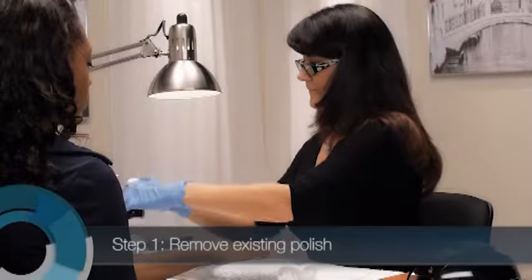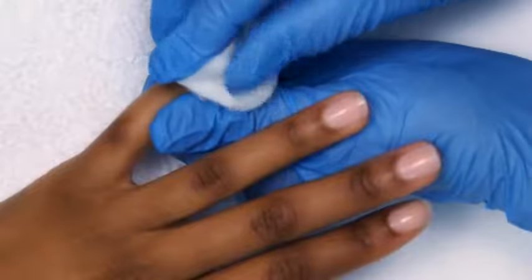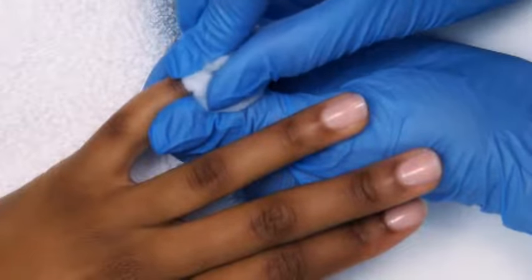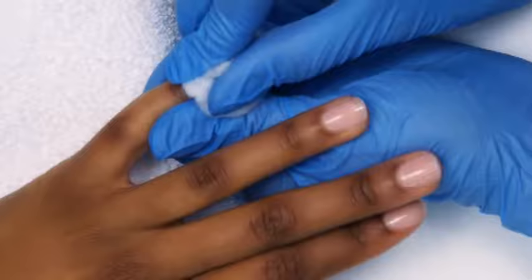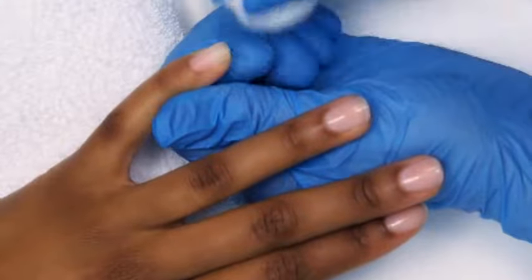Use a cotton ball, gauze pad, or plastic-backed cotton pad to do this. Apply enough nail polish remover to saturate the cotton ball, then start with the little finger of the client's left hand and use a confident, firm touch to remove the polish.